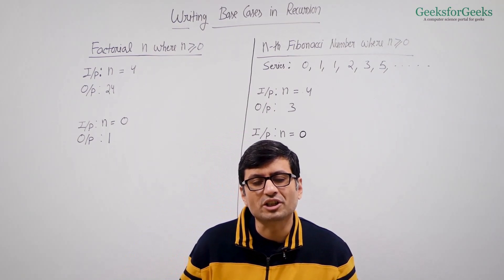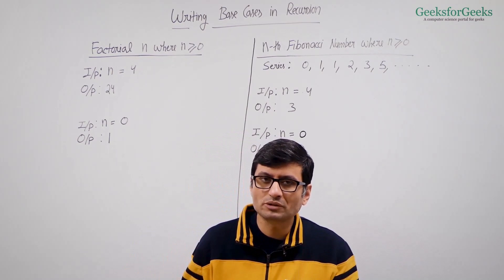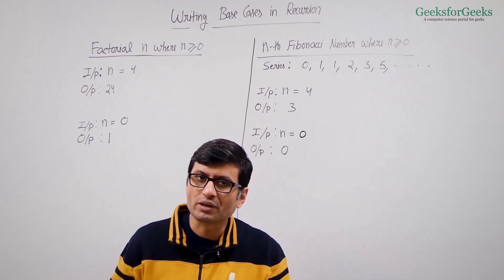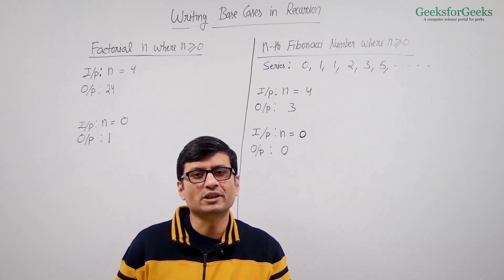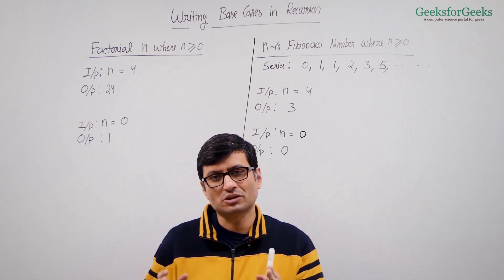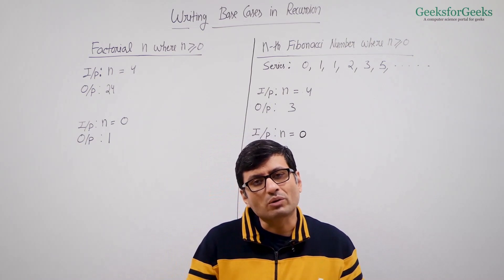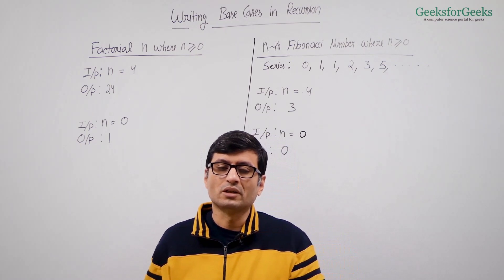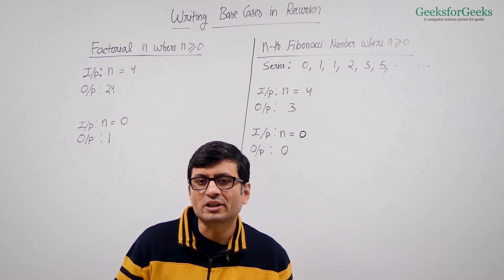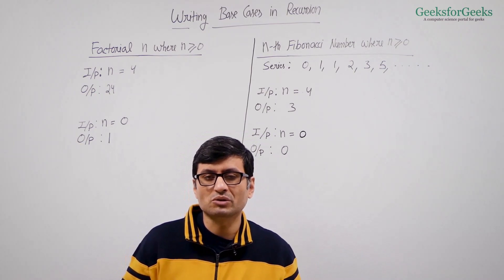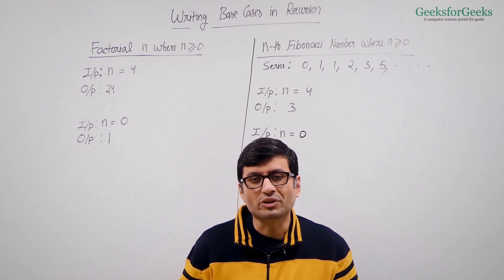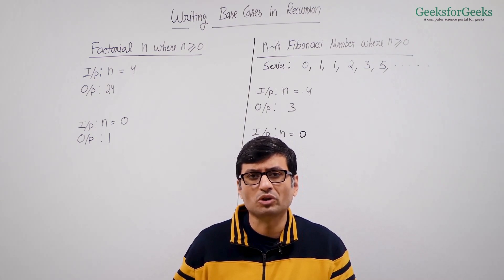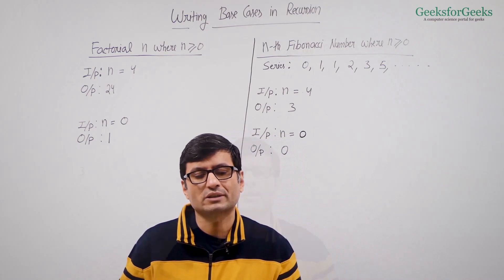In this video I am going to consider two problems. The first problem is finding the factorial of a number, where input n is greater than or equal to zero. The second problem is finding the nth Fibonacci number, where n is also greater than or equal to zero. Please pause this video and try to write down recursive solutions for both problems with proper base cases.